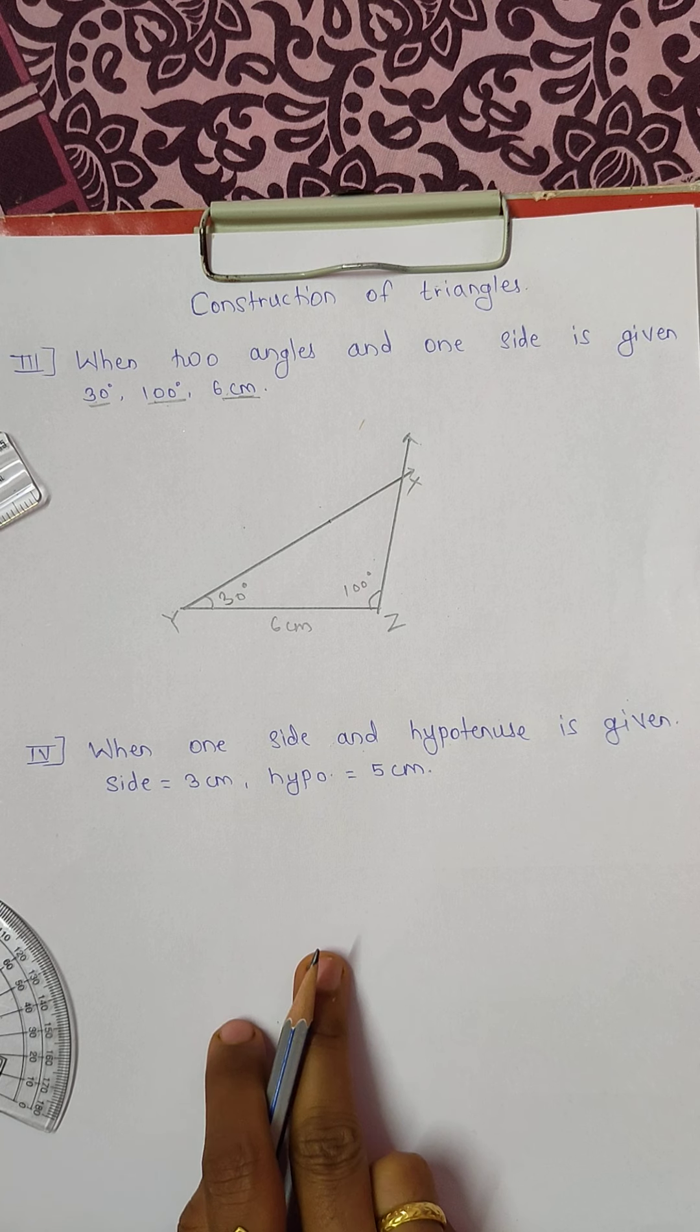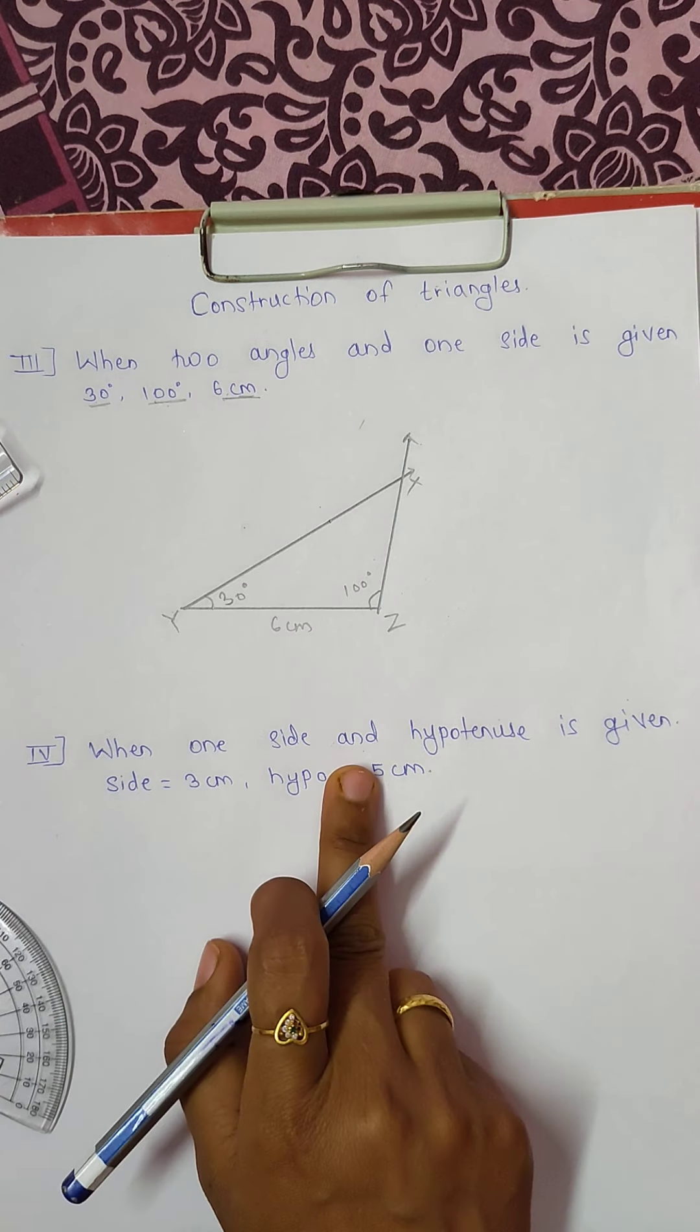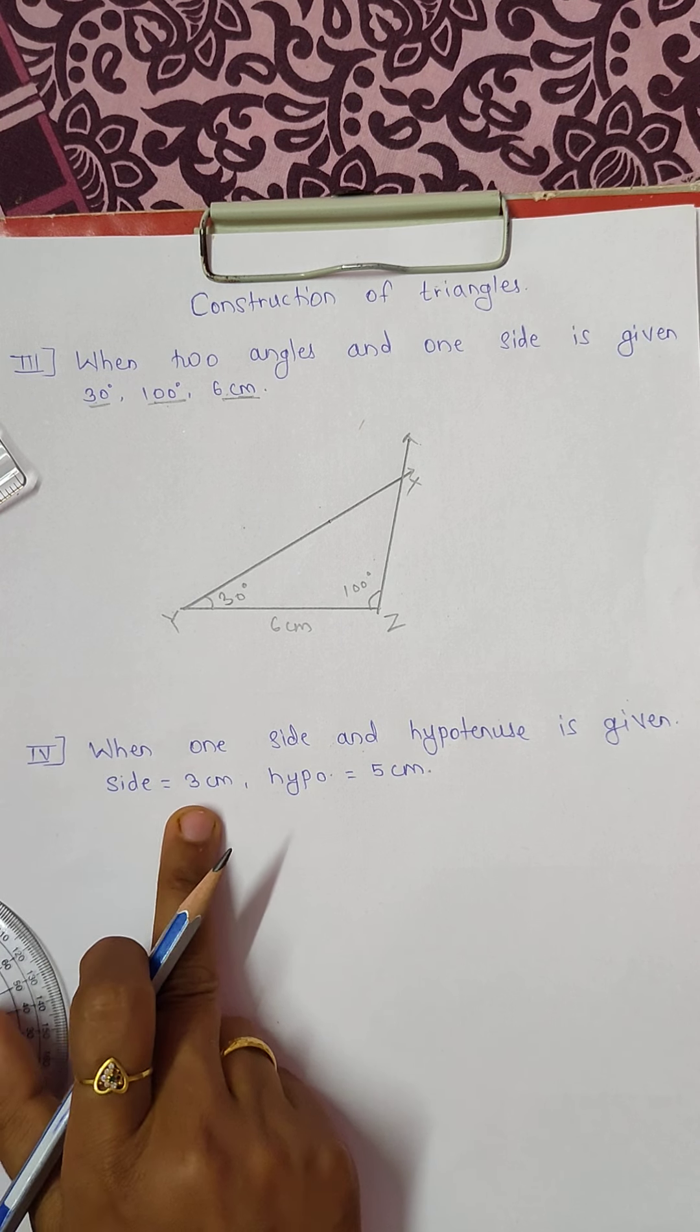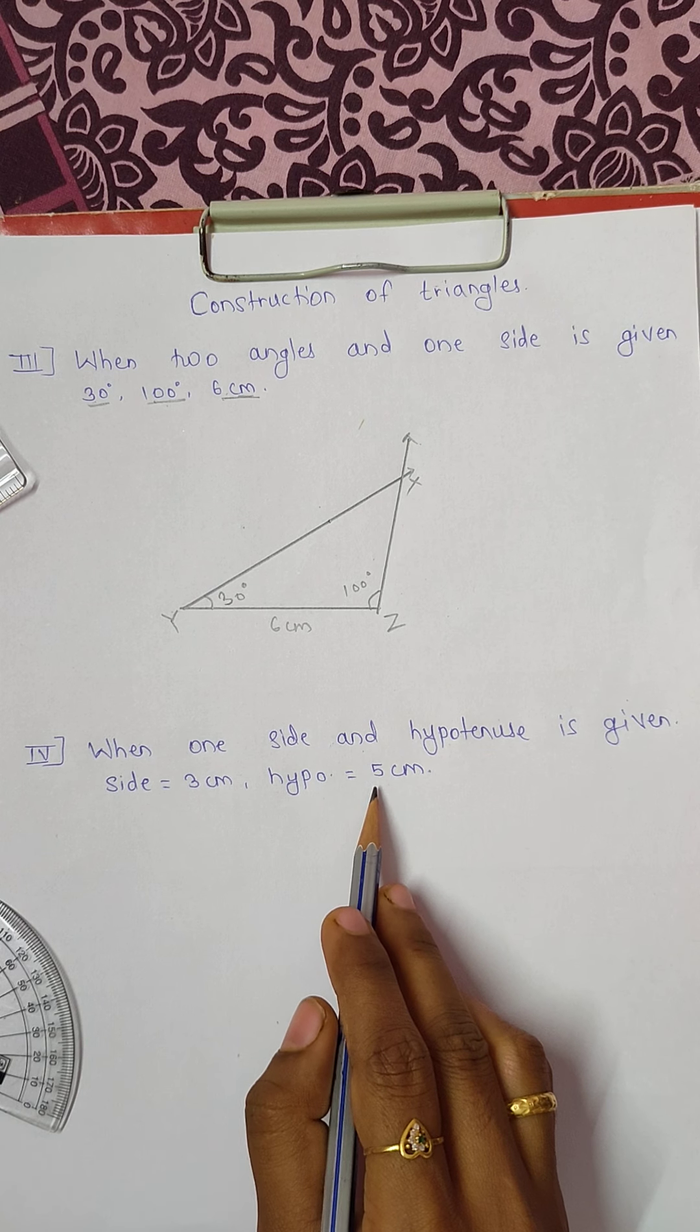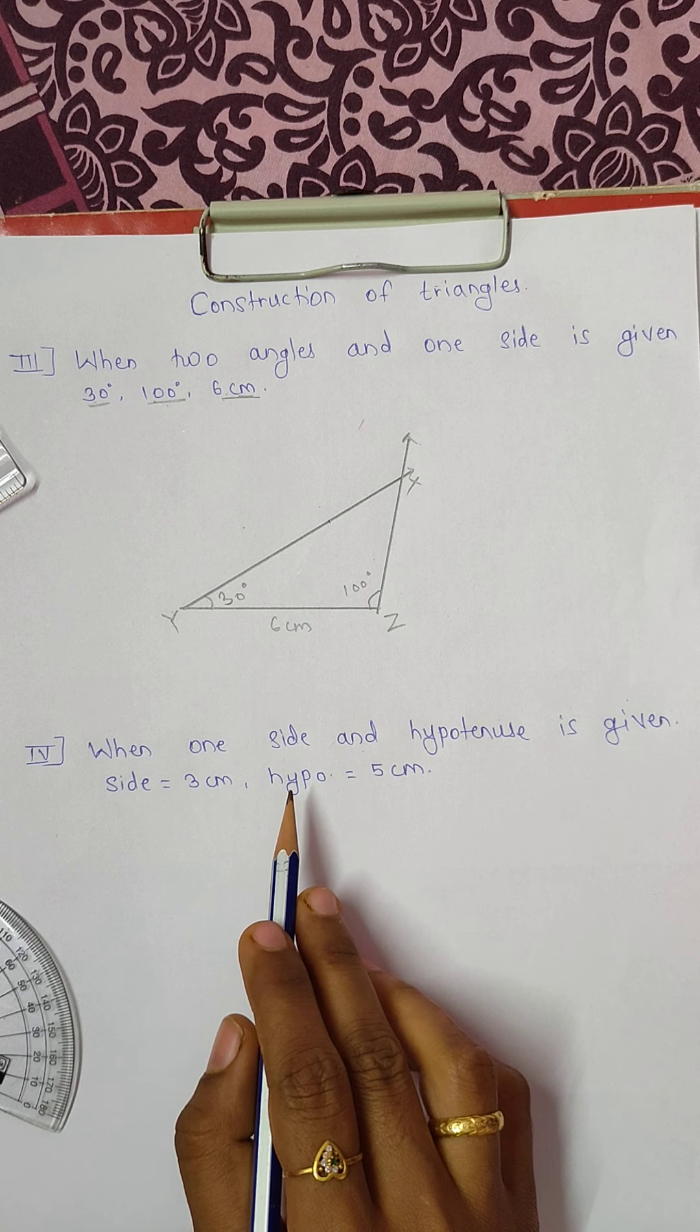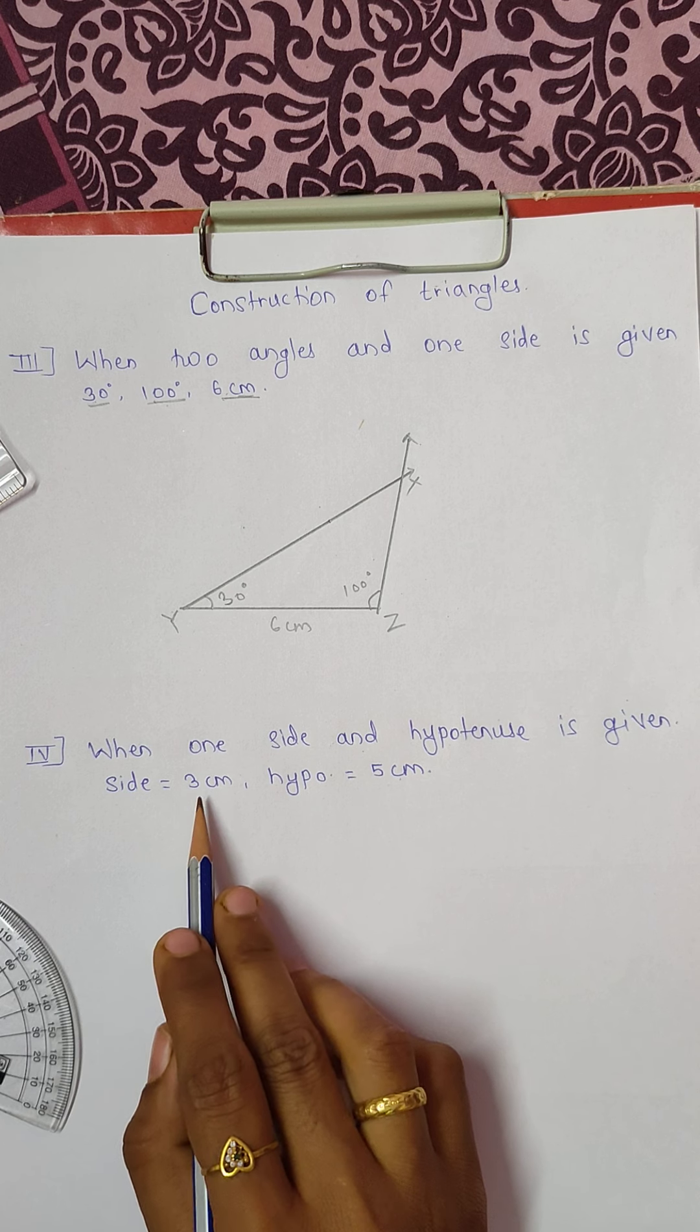The second one, the last method from our textbook is when one side and a hypotenuse is given. Now I have written side is equal to 3 centimeters and hypotenuse is equal to 5 centimeters. If side and hypotenuse words are not given, still you come to know that 5 is the hypotenuse only and 3 is the side.